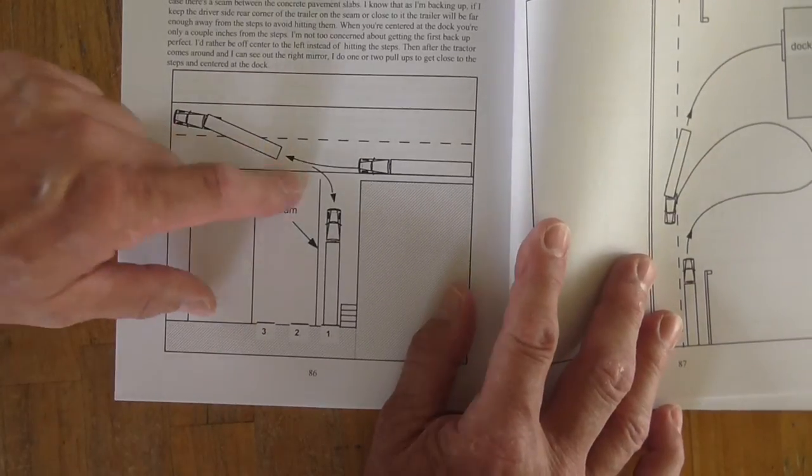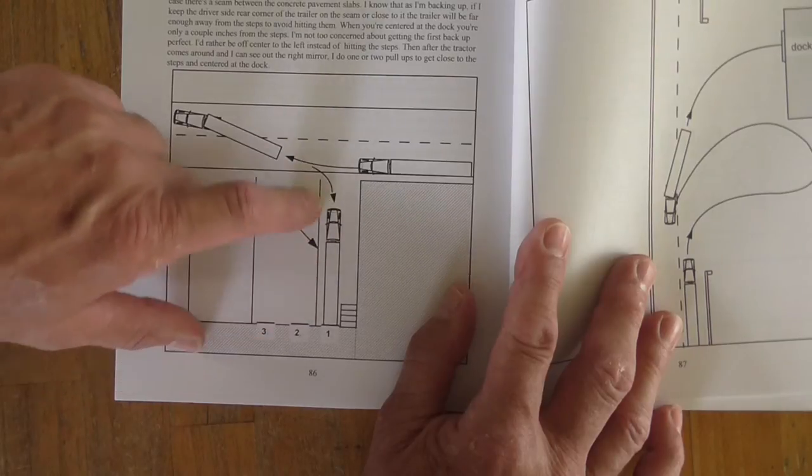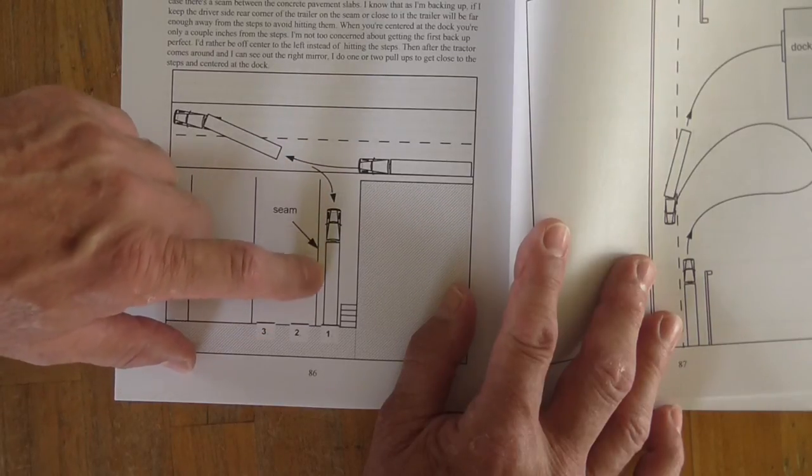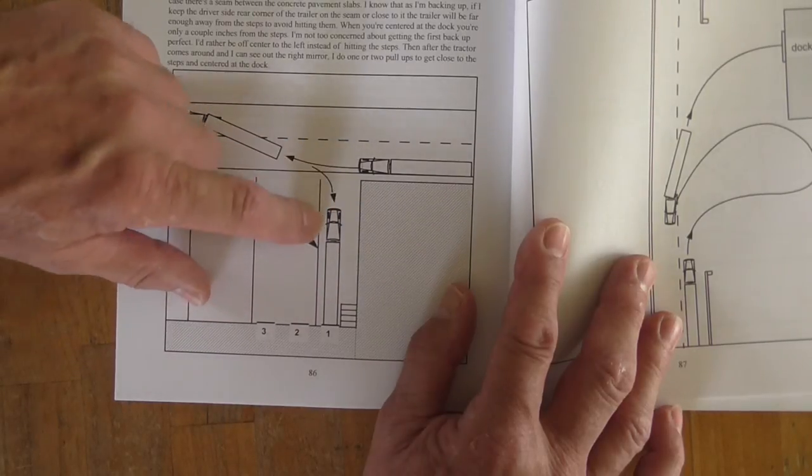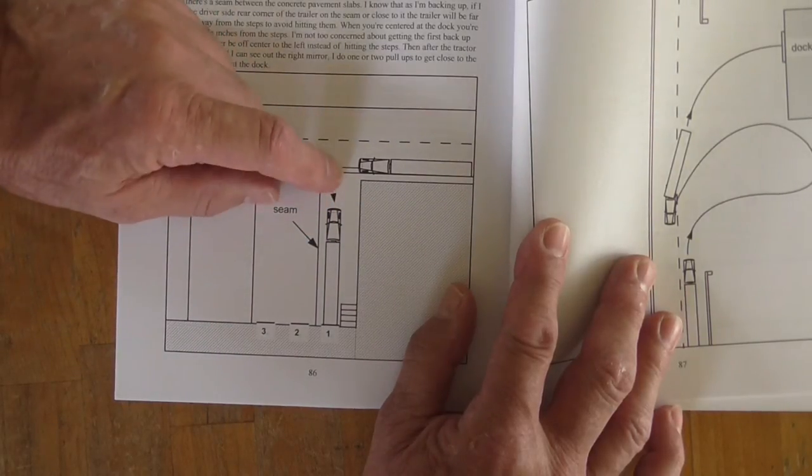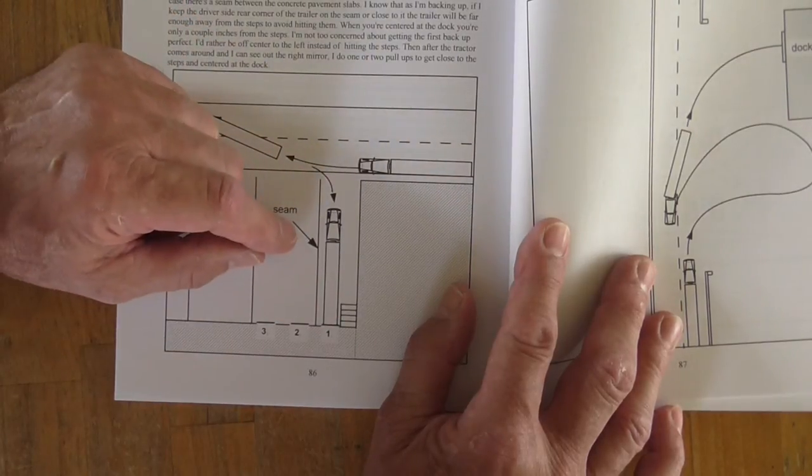I'm not too concerned about getting it perfect the first time. I just want to get it in here, get the trailer and the tractor straightened out. Then I pull up, watch for traffic, pull up here as far as I can. And now I can use that right-hand mirror to see where the steps are.